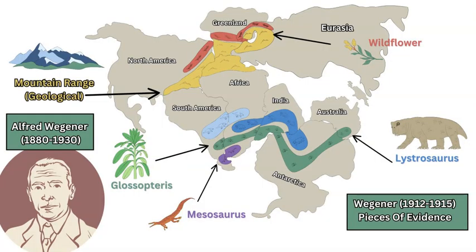When investigating both Pangaea and continental drift we have to introduce this certain scientist named Alfred Wegener, a German scientist born in 1880 and died in 1930. During his life he was influential at researching and discovering various pieces of evidence to suggest that the modern day position of our continents, our large land masses, were not always where they are today. They had moved, they had drifted apart over a very long timescale.